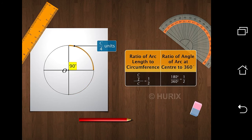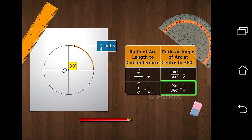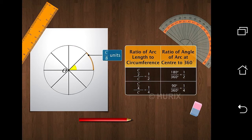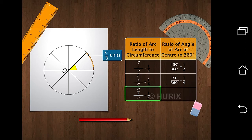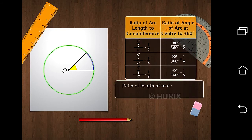Next, here is a quadrant of the circle. The length of the arc is now one-fourth of the circumference of the circle and the angle made by the arc at the center is 90 degrees. Once again, we take the ratio of the length of the arc to the circumference of the circle and the ratio of the angle of the arc made at the center to 360 degrees. Notice that both ratios are the same. Similarly, when the length of the arc is one-eighth of the circumference of the circle, the angle made by the arc at the center is 45 degrees, which is one-eighth of 360 degrees. Thus, the ratio of the length of the arc to the circumference of the circle is equal to the ratio of the angle made by the arc at the center, represented by theta, to 360 degrees.